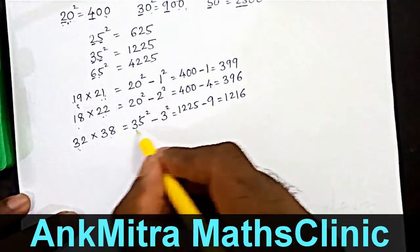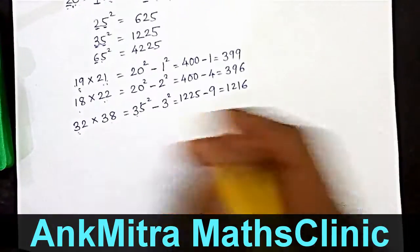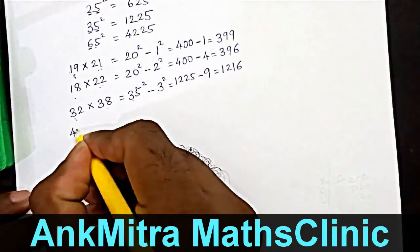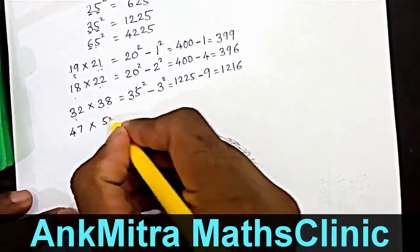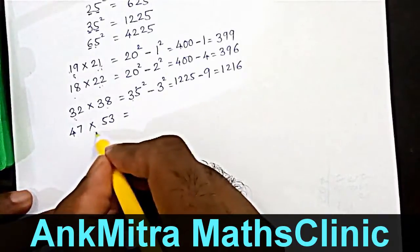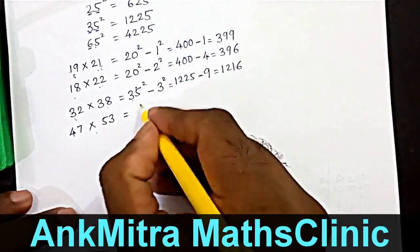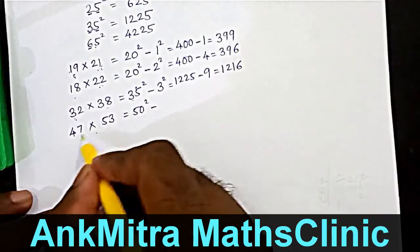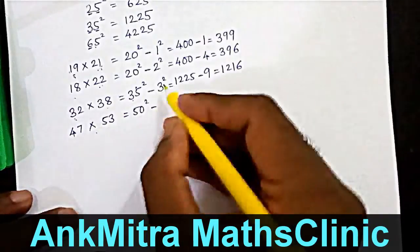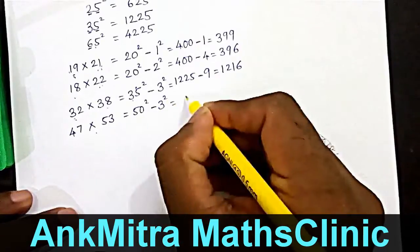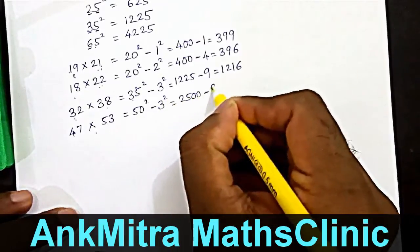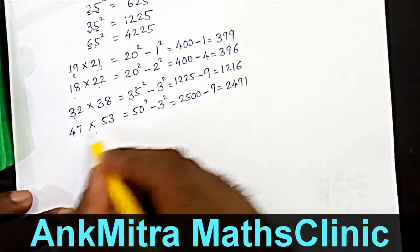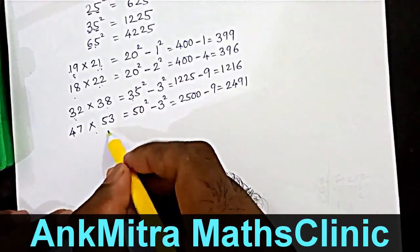Isn't this very easy to calculate? We can do most of this calculation orally. Let's look at a few more examples. Something like 47 multiplied by 53. The middle number is 50. So we will start with 50 squared and then subtract the square of three, because three is the difference between 50 and either of these two numbers. 50 squared is 2500, minus nine, which comes to two thousand four hundred and ninety-one — the product of 47 and 53.